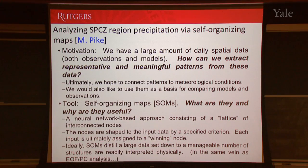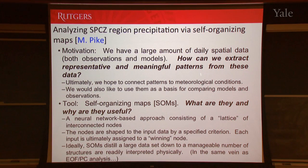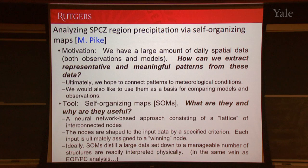I just wanted to briefly talk about the work by my other student Max Pike, who's just starting out. This applies a self-organizing map approach to analyze SPCZ region precipitation. Our motivation is that we have a large amount of daily spatial data from observations and models — more data sometimes than we can handle. What kinds of tools can we apply to extract representative and meaningful patterns? Ultimately we hope to connect whatever patterns we see to the meteorological conditions to make a physical attribution, and also use these as a potential basis for comparing models and observations.